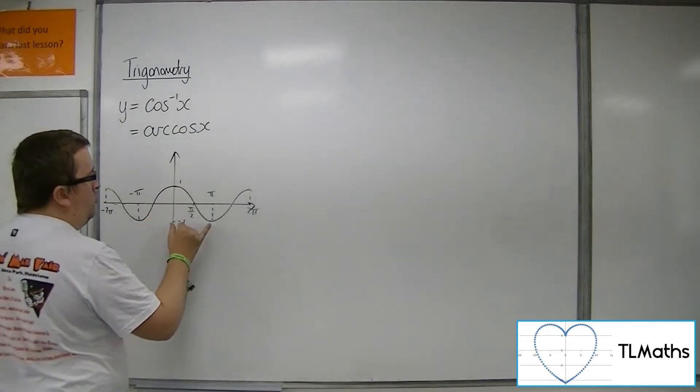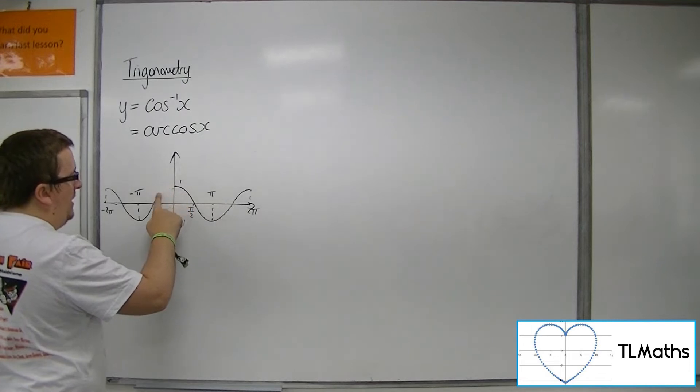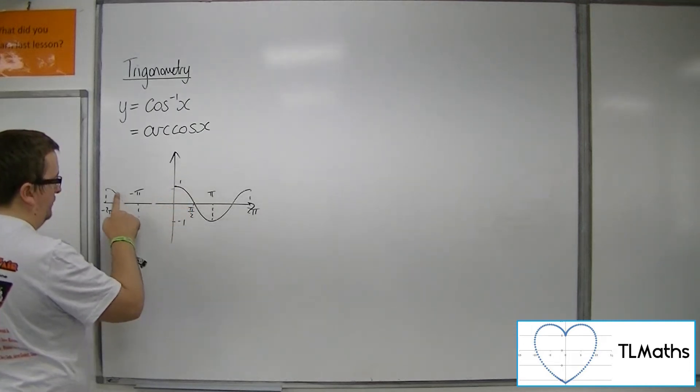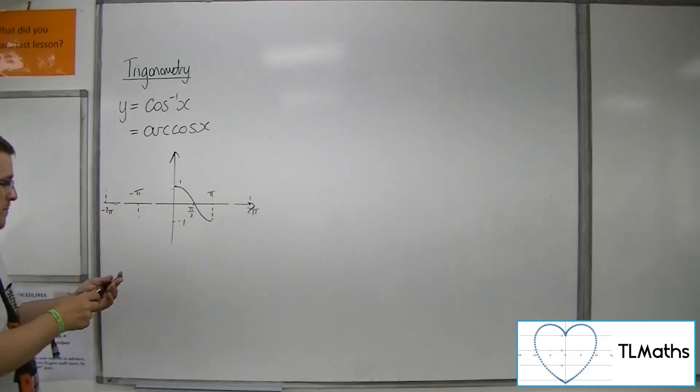We traditionally go from 0 to pi, however, so we cut the curve so that only the part from 0 to pi exists.